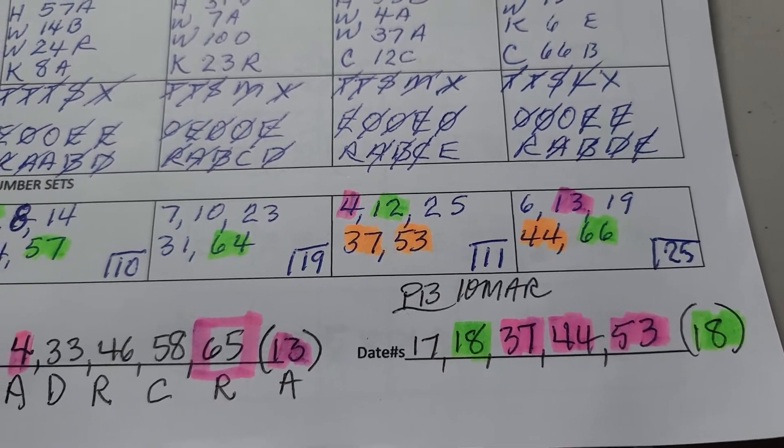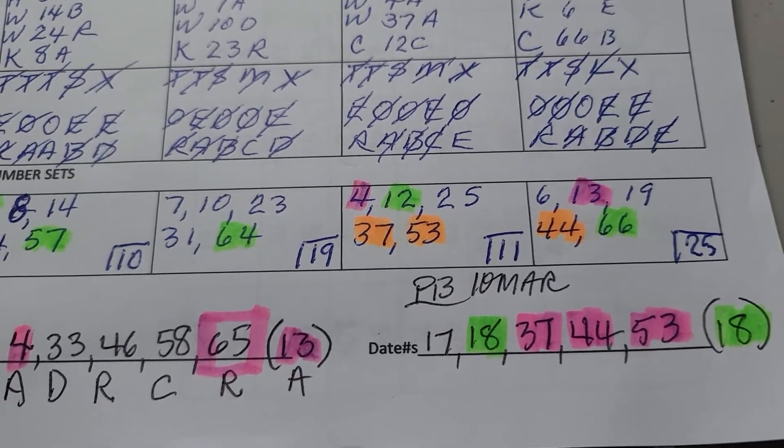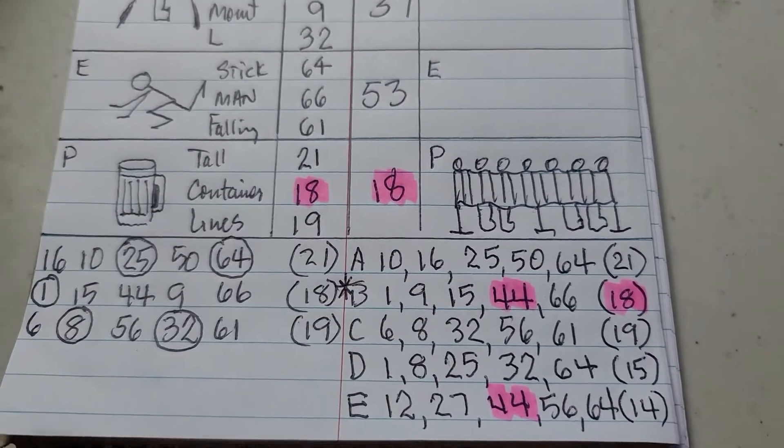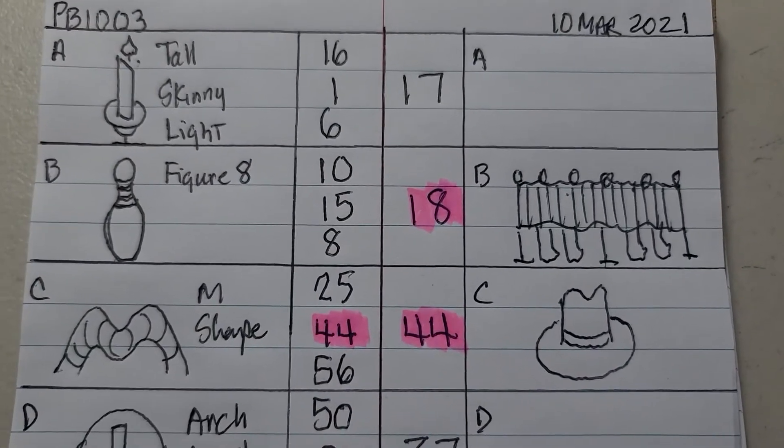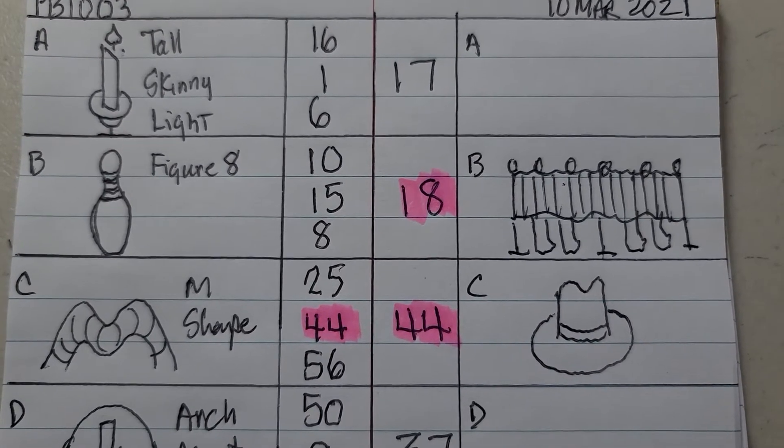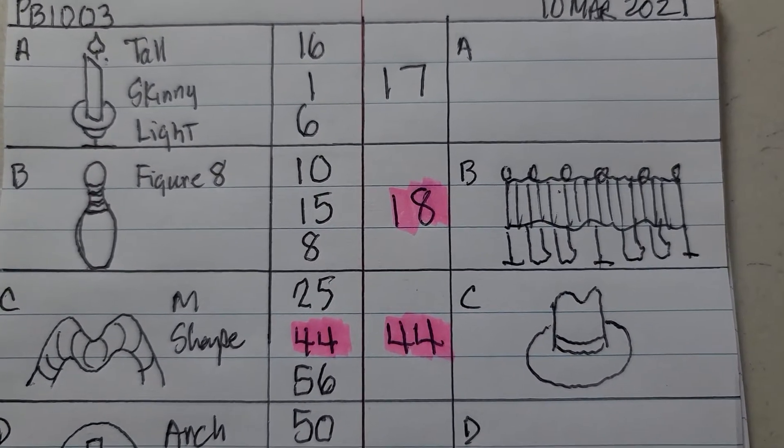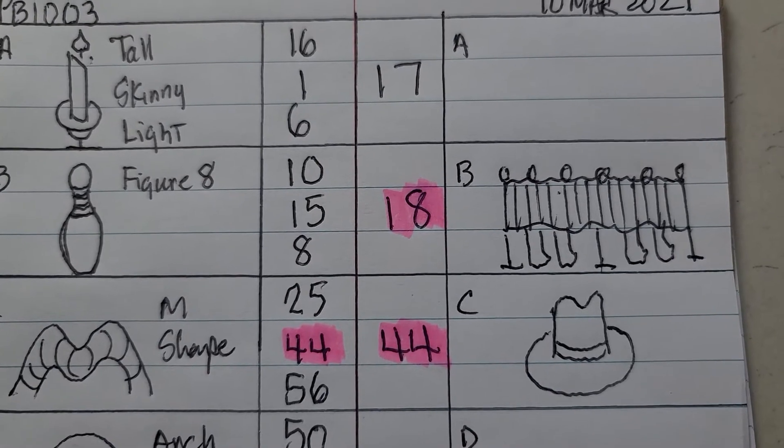And finally, the last part of my feedback is my pictures. And I was able to hit three of the numbers, actually two of them, 18 and 44.